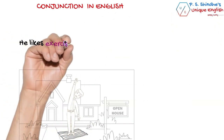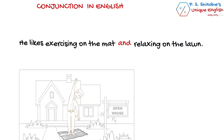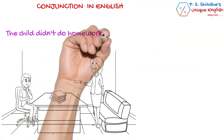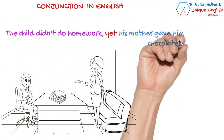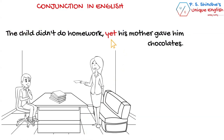'He likes exercising on the mat and relaxing on the lawn.' Here, two phrases of equal rank — exercising on the mat and relaxing on the lawn — are connected by the conjunction 'and.' In another example: 'The child didn't do homework, yet his mother gave him chocolates.' The conjunction 'yet' joins two clauses. By now, you have seen how a conjunction can link two or more equal-status words, phrases, and clauses to help form a sentence in English.